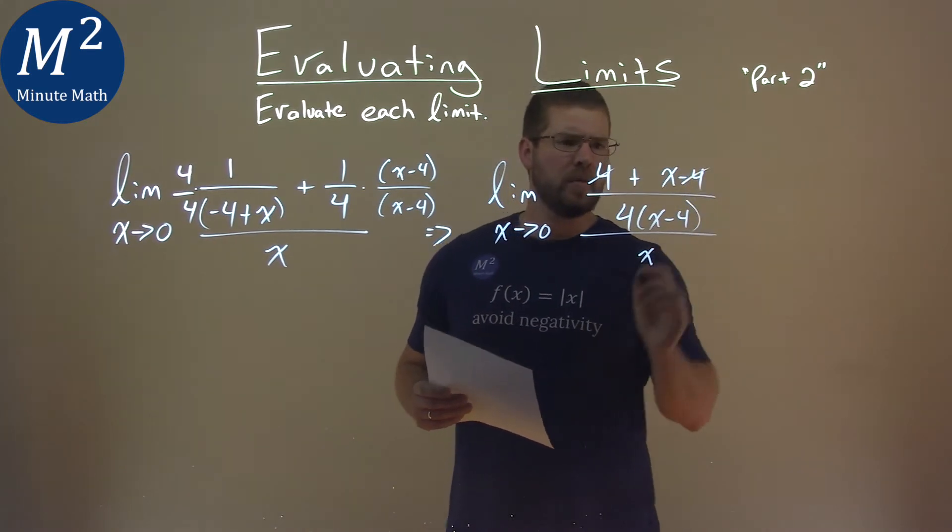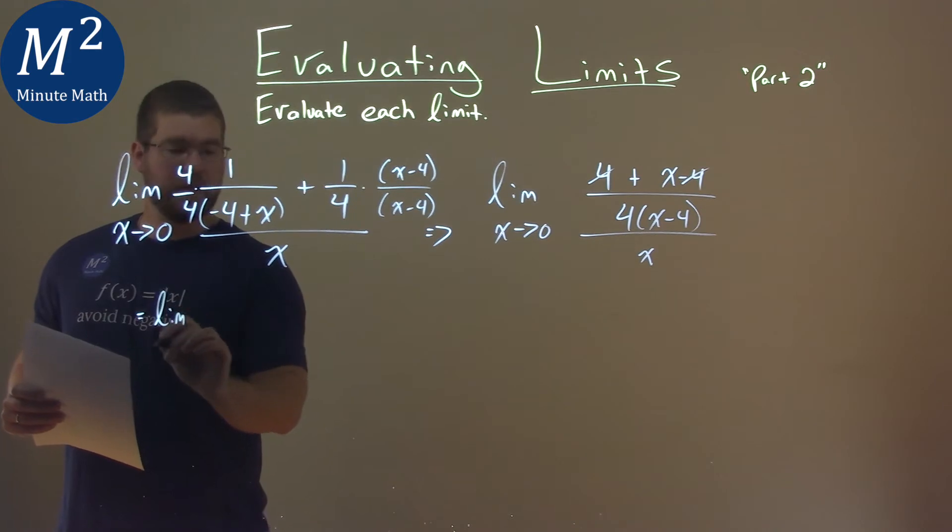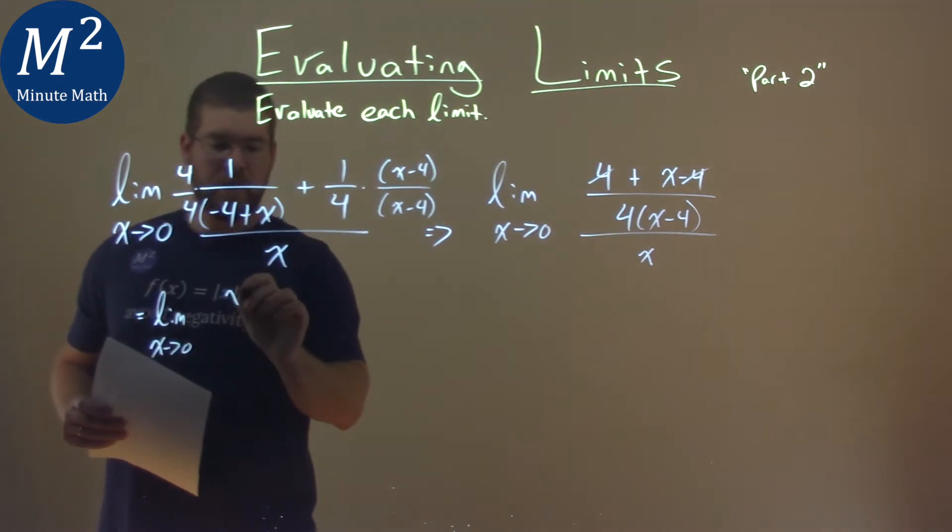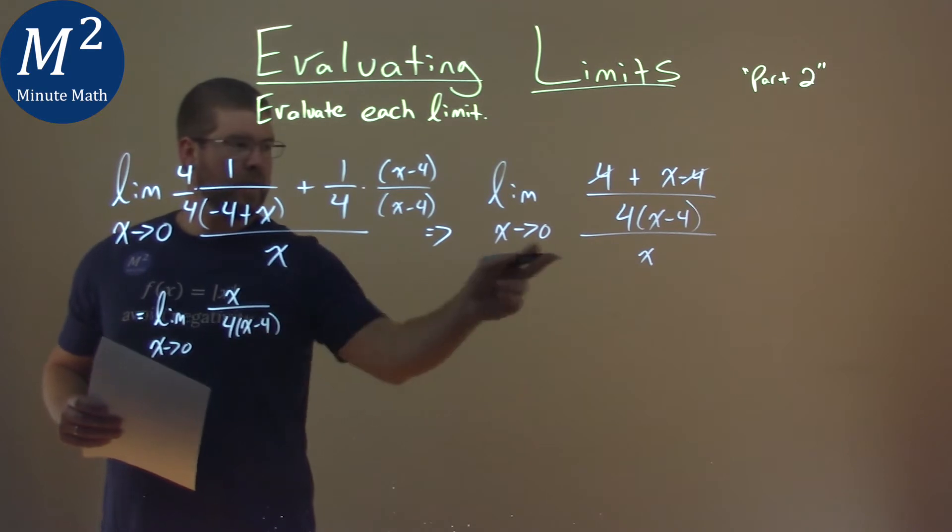So what do we have? Let's rewrite it here. We have the limit as x approaches 0 of that numerator x over 4x minus 4, and that's divided by x.